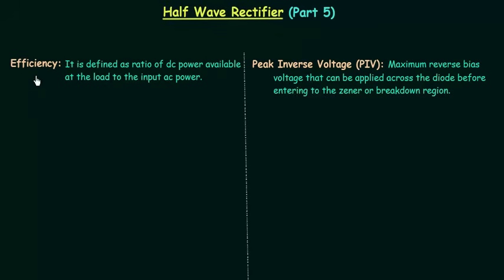In this lecture I will explain efficiency and peak inverse voltage. Efficiency is defined as the ratio of DC power available at the load to the input AC power. Efficiency is denoted by eta.